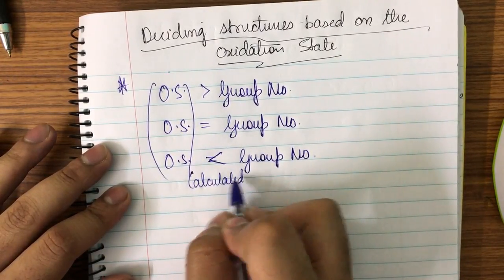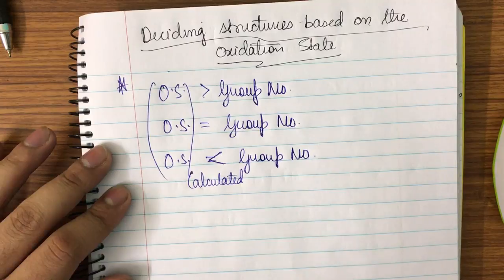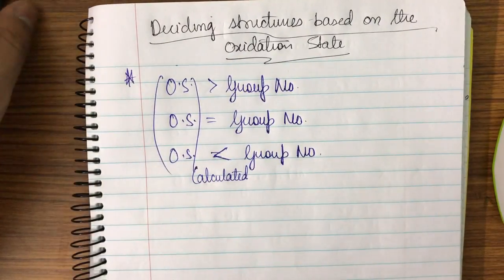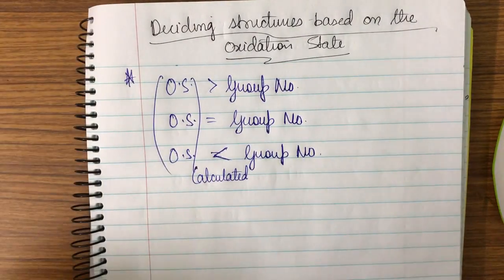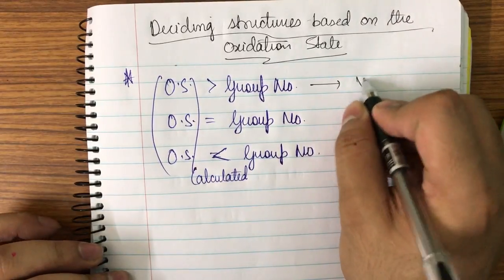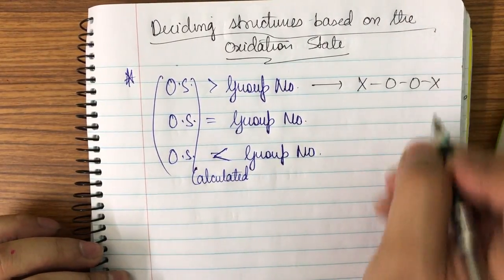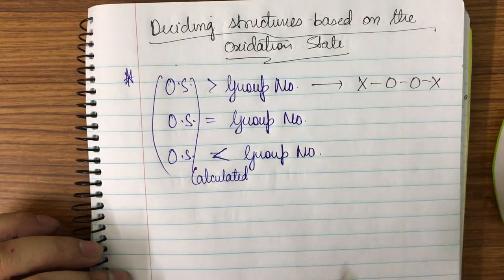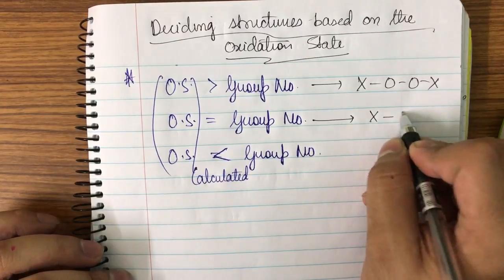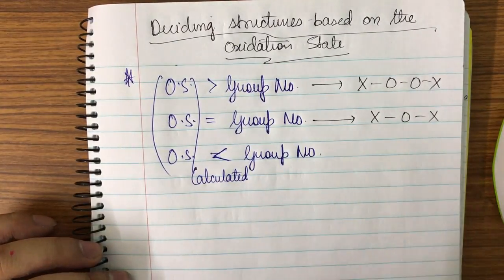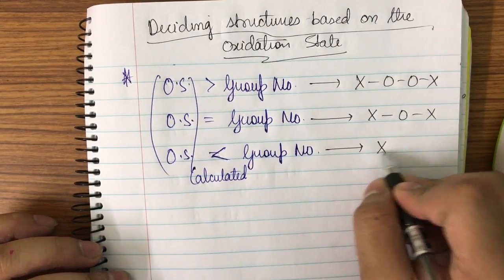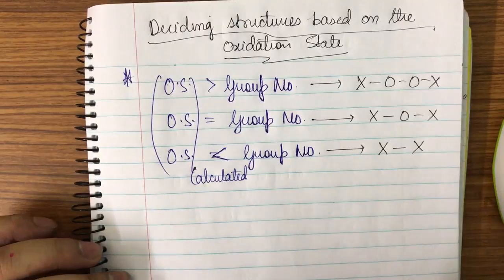So if the oxidation state is greater than the group number, I'll get a peroxy linkage (O–O). If it is equal to the group number, I will get an X–O–X linkage. If it is less than the group number, I'll get an X–X linkage.